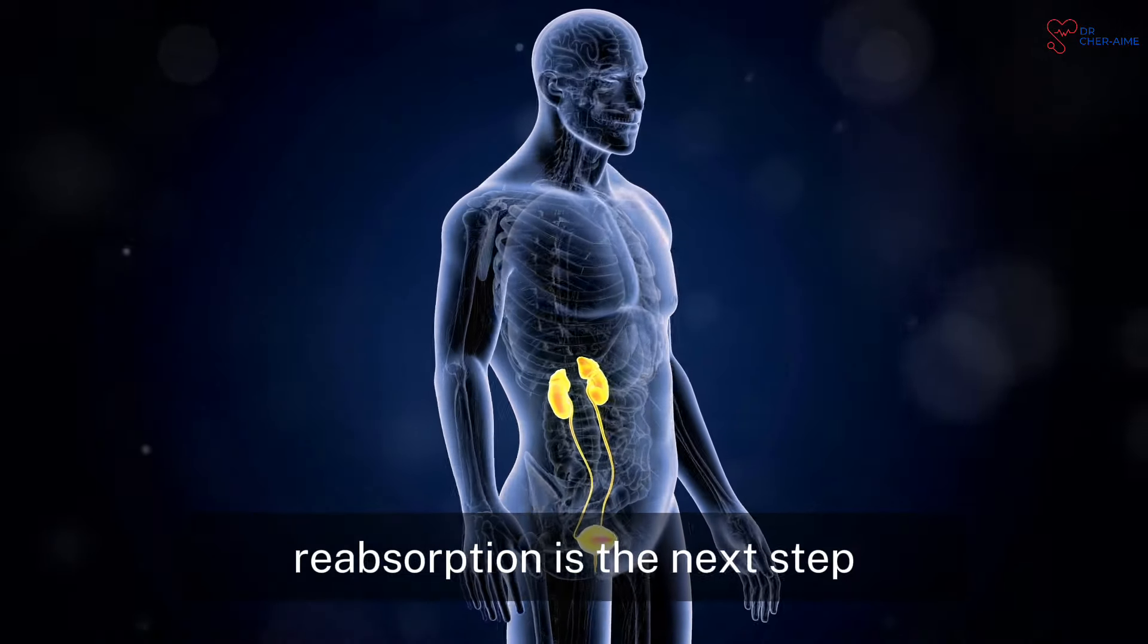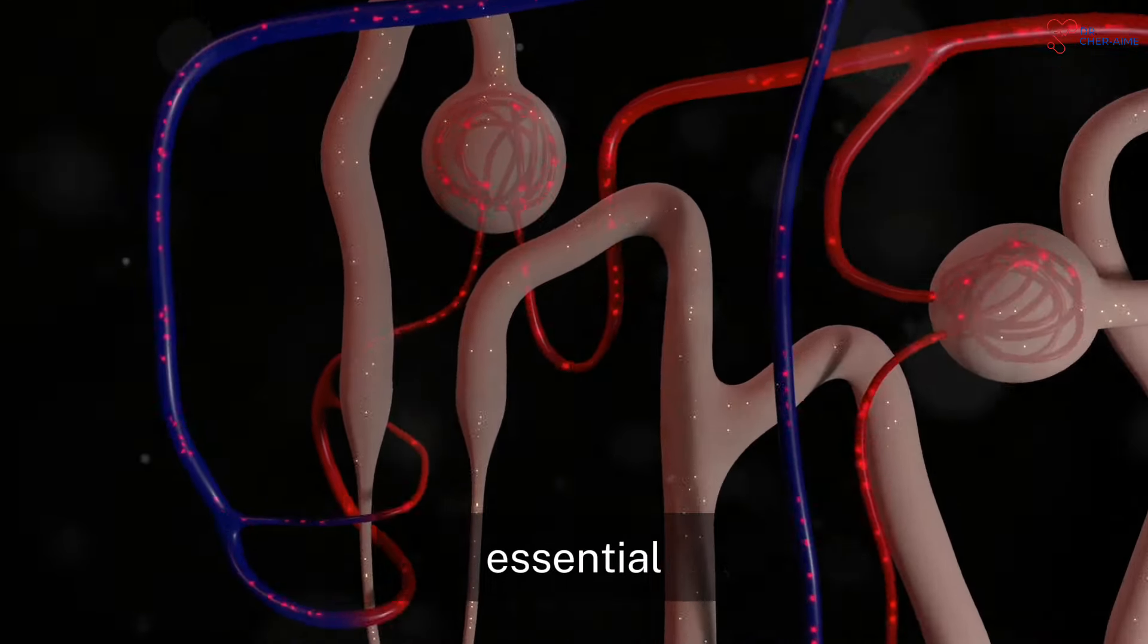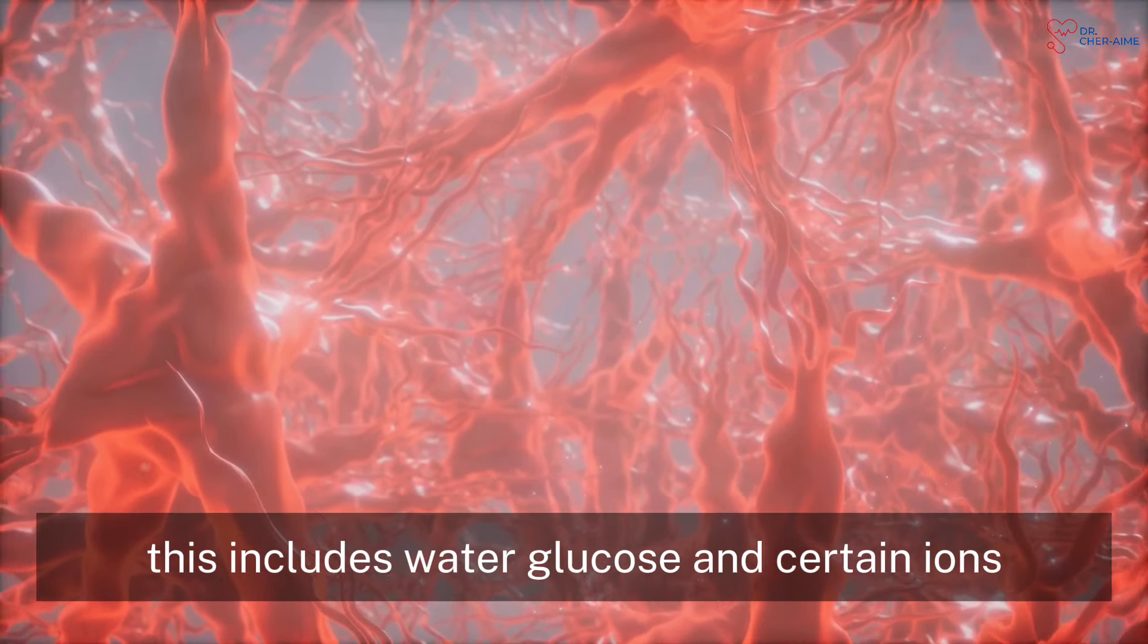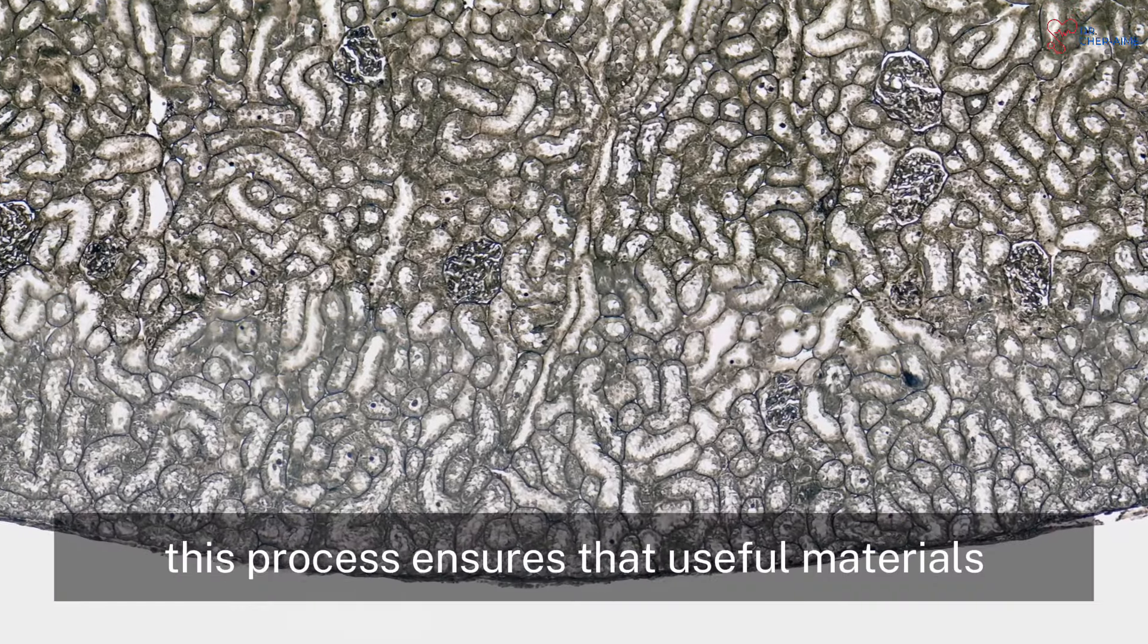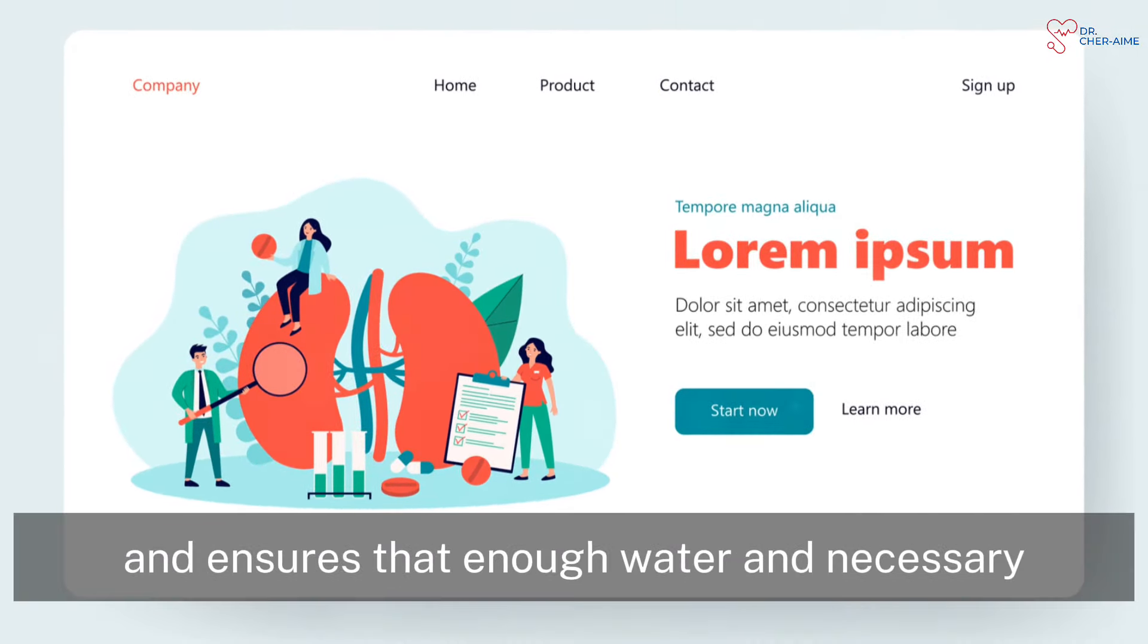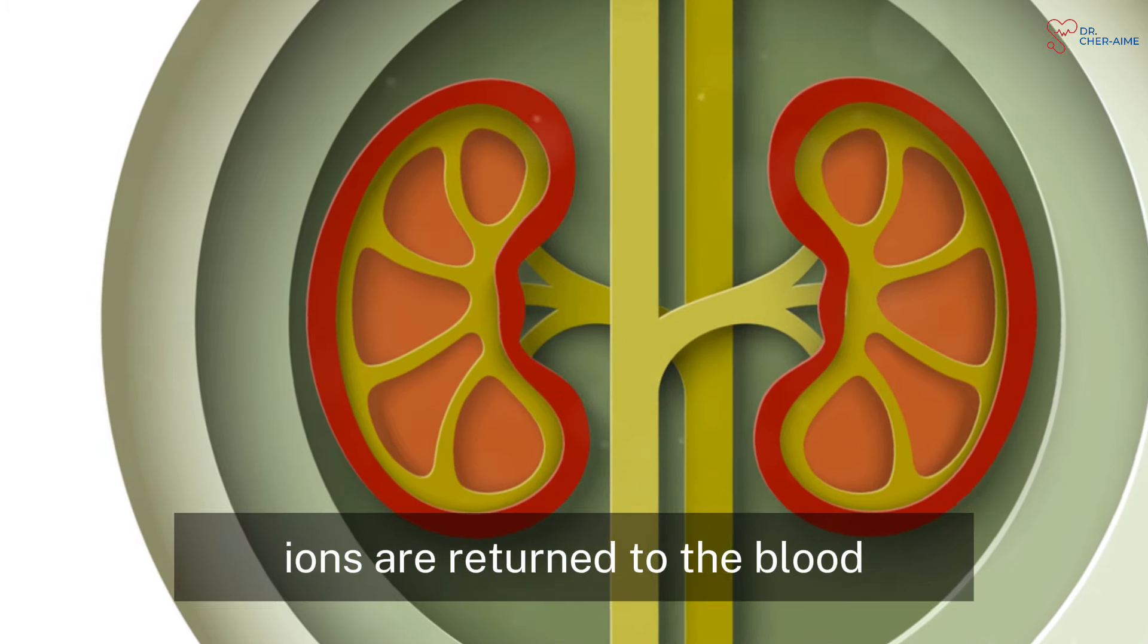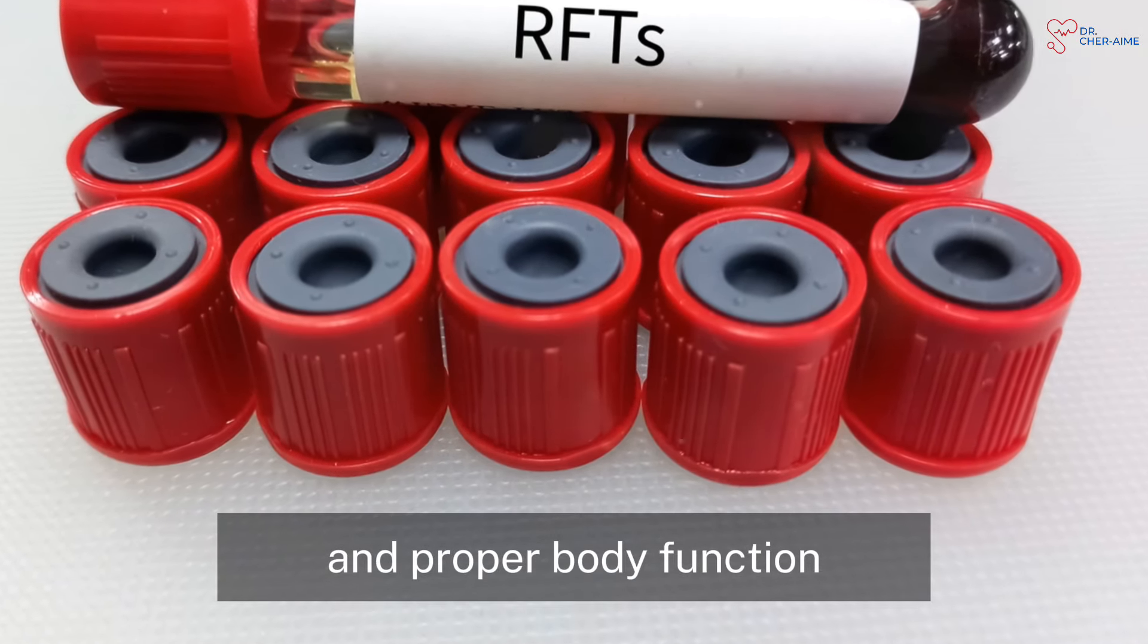Reabsorption is the next step. As the filtrate passes through the tubules of the nephron, essential substances are reabsorbed into the bloodstream. This includes water, glucose and certain ions. This process ensures that useful materials are not lost from the body. Reabsorption helps the body maintain its electrolyte balance and ensures that enough water and necessary ions are returned to the blood. This step is critical for maintaining overall health and proper body function.